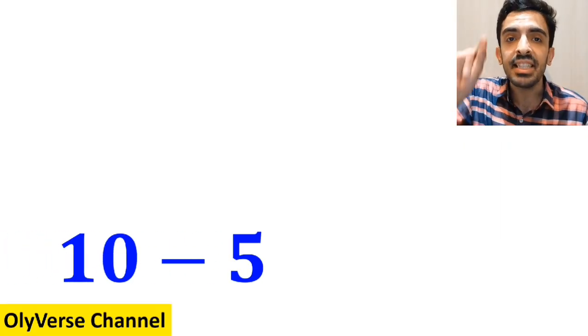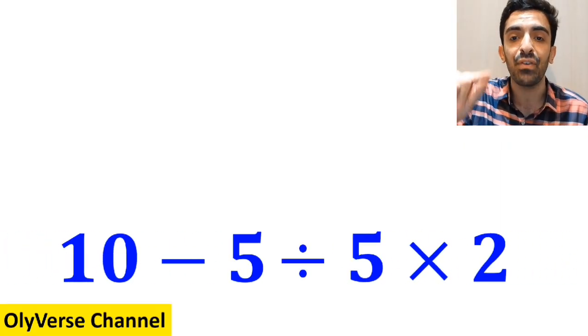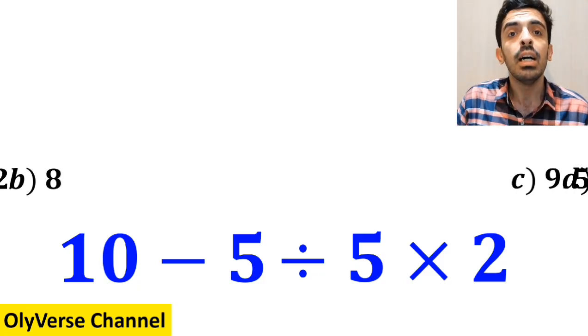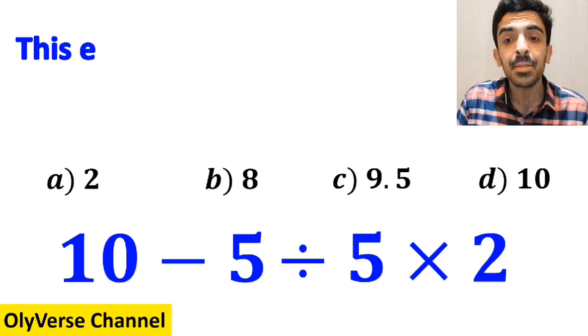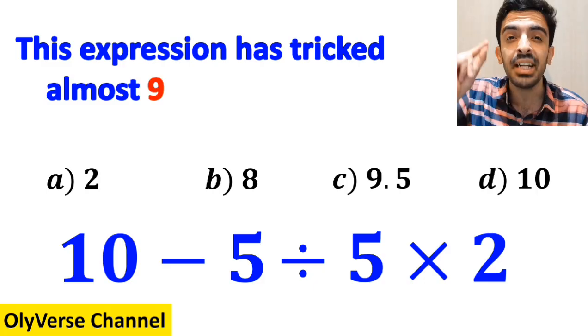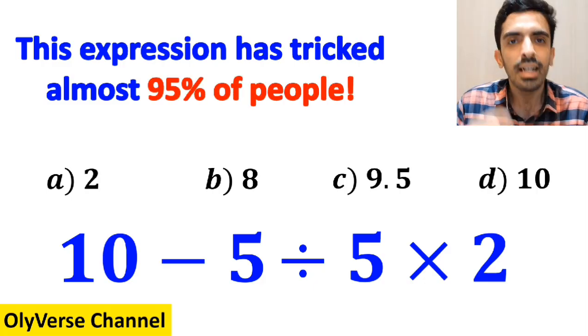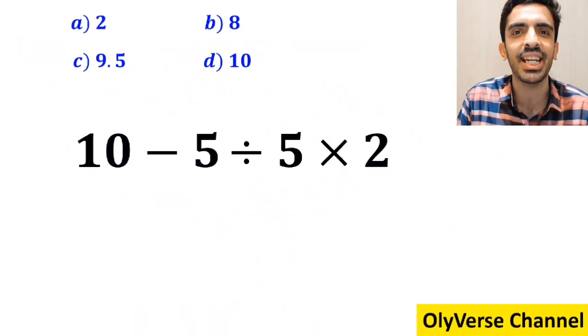What is the value of the expression 10 minus 5 divided by 5 then times 2? Which option do you think is the correct answer to this question? This expression has tricked almost 95% of people. Let's take a closer look and solve it together.